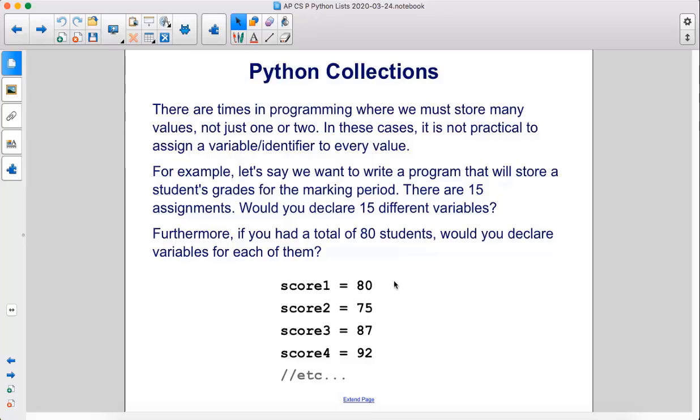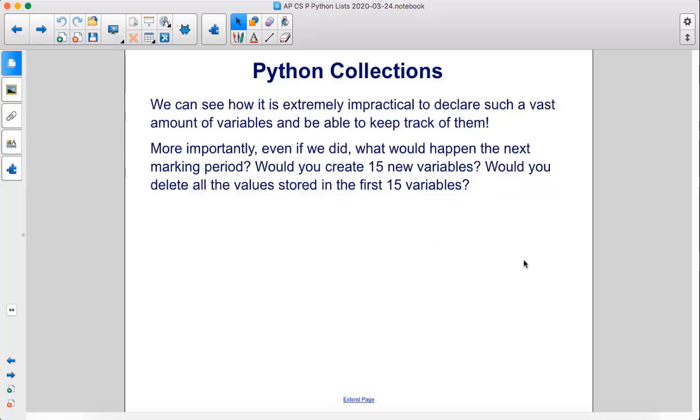Furthermore, if you had a total of 80 students, would you declare variables for each of them, like this? We can see how it is extremely impractical to declare such a vast amount of variables and be able to keep track of them.